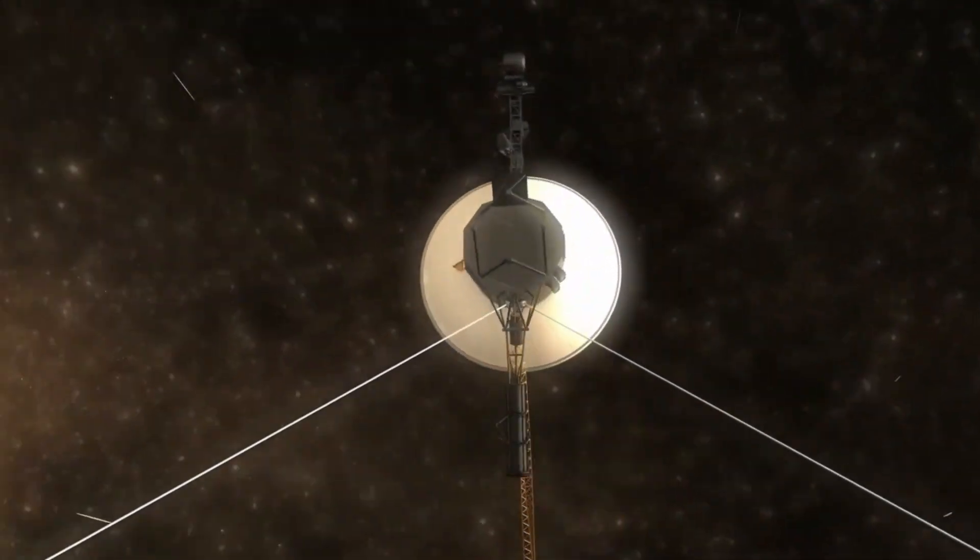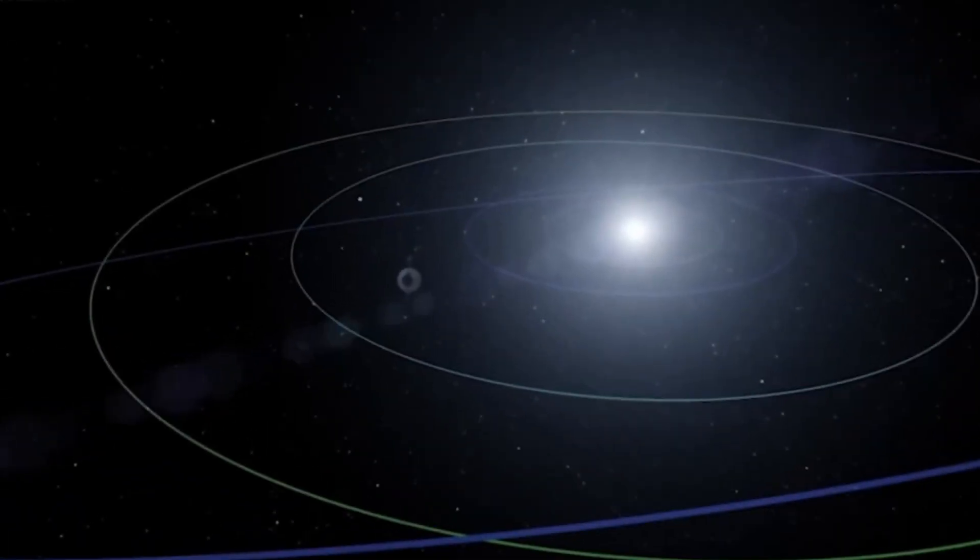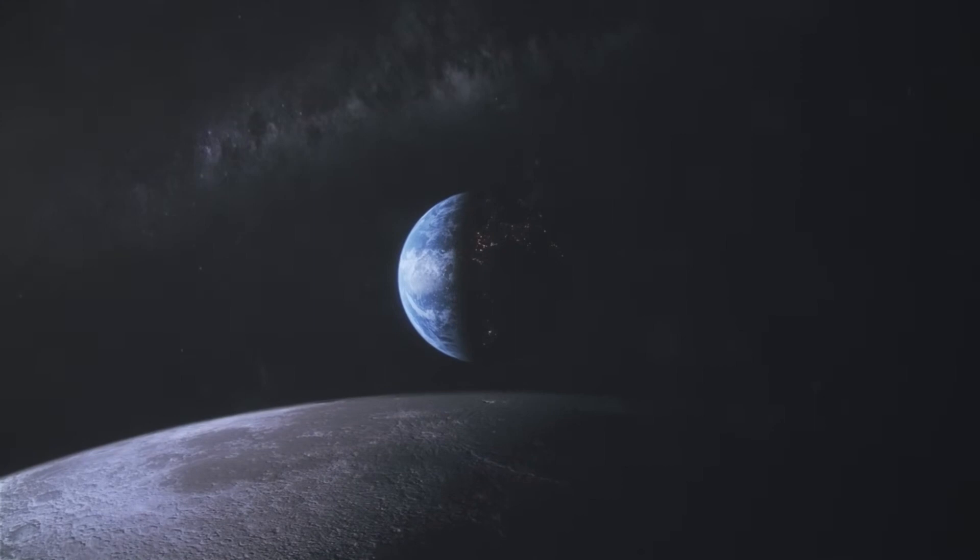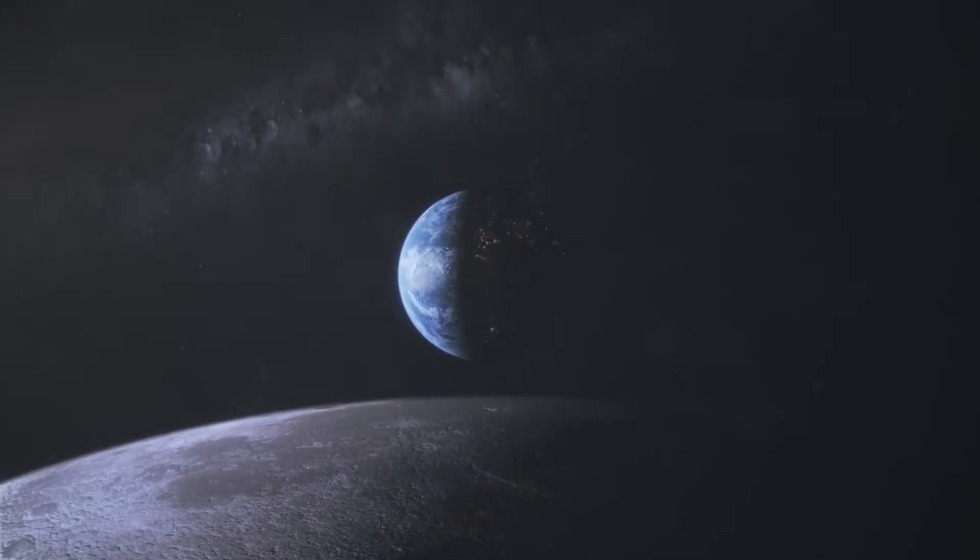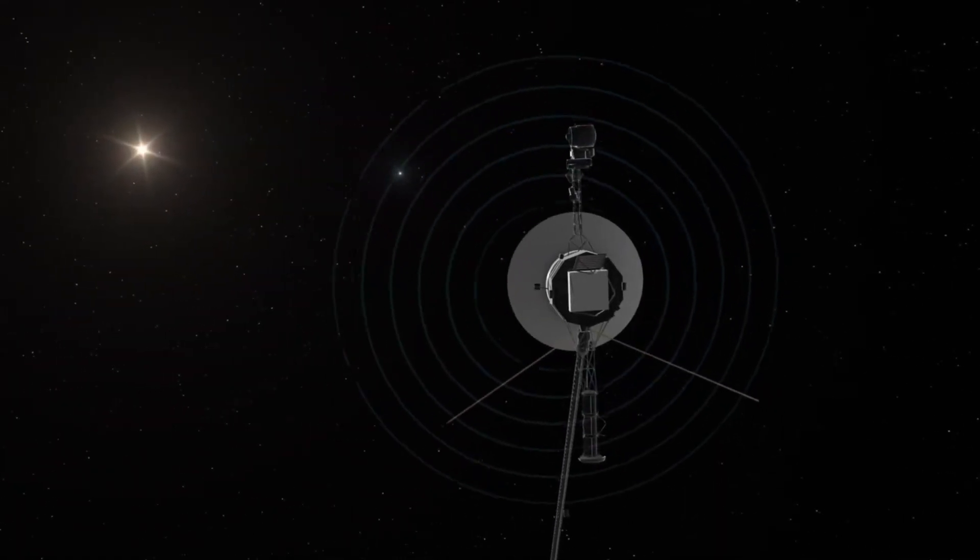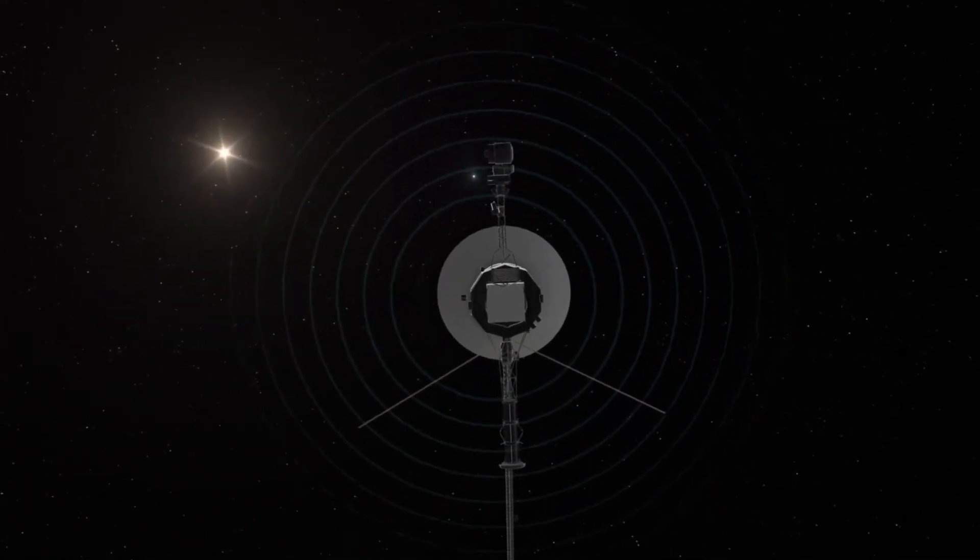In the 1970s, a rare alignment of the outer planets occurred, a cosmic event that happens only once every 176 years. NASA had to seize the opportunity. If everything went according to plan, at least one of the probes would reach the outer planets. As luck would have it, both probes succeeded.